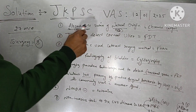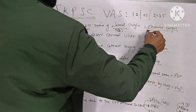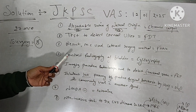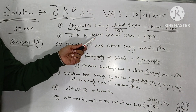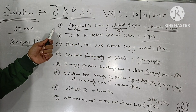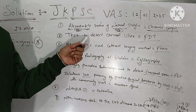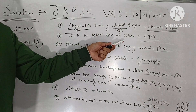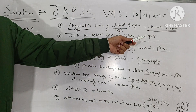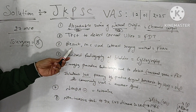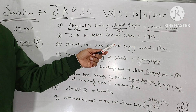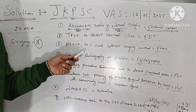The suture material that is both absorbable and of natural origin — these are the two key points to identify it — is chromic catgut. Next is the detection of corneal ulcers: the diagnostic test used to detect corneal ulcers is the FDT — fluorescein dye test.